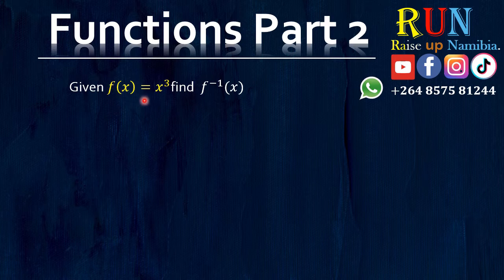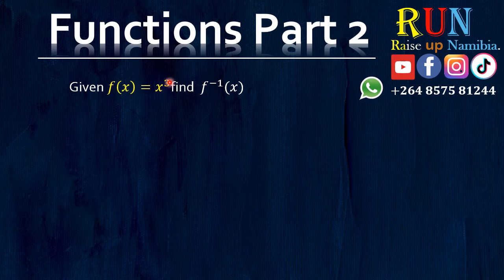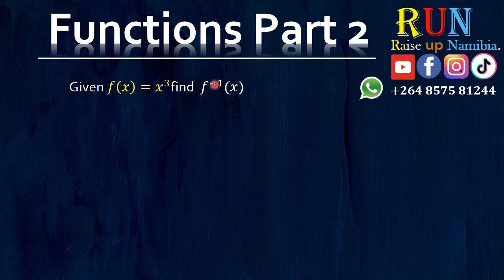So what do you do when you are given a certain function and you are asked to find its inverse? How do you know that you are being asked to find the inverse? Normally we will say f of x is equal to x cubed. When you are asked to find the inverse, the f will have an exponent of negative 1. So f⁻¹(x) basically means you are being asked to find the inverse of f of x.